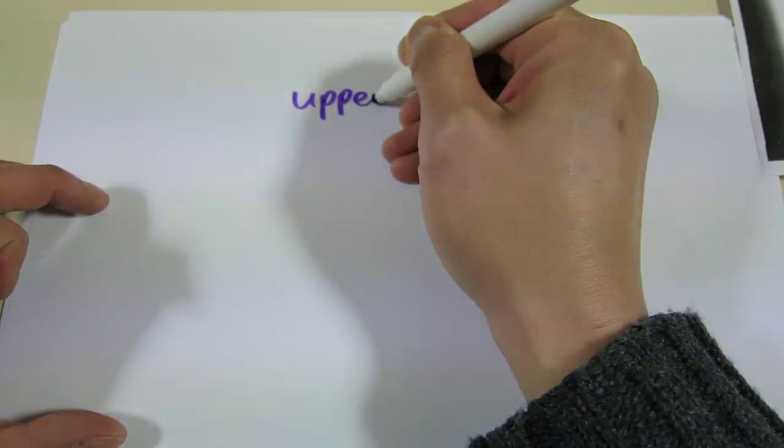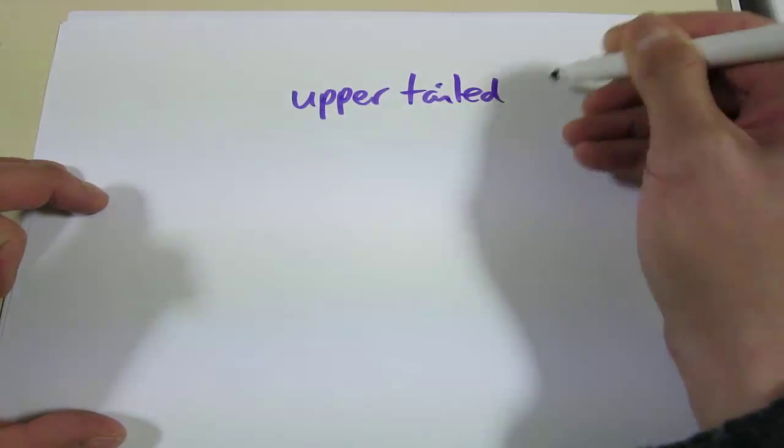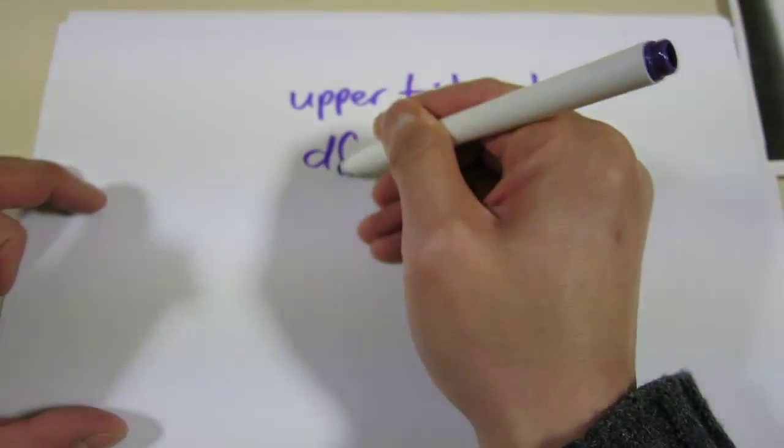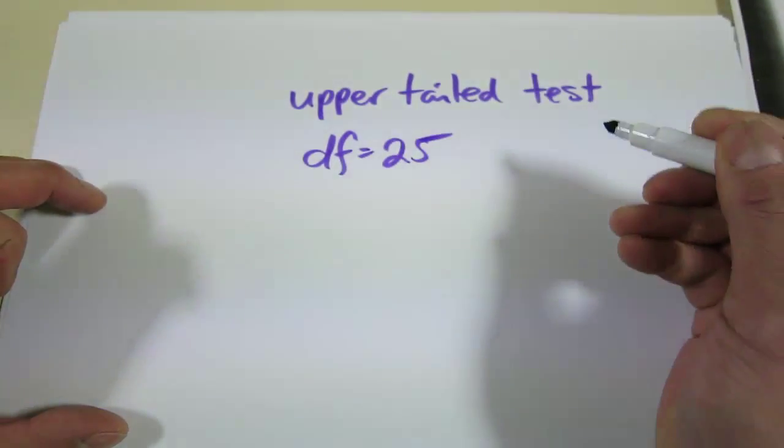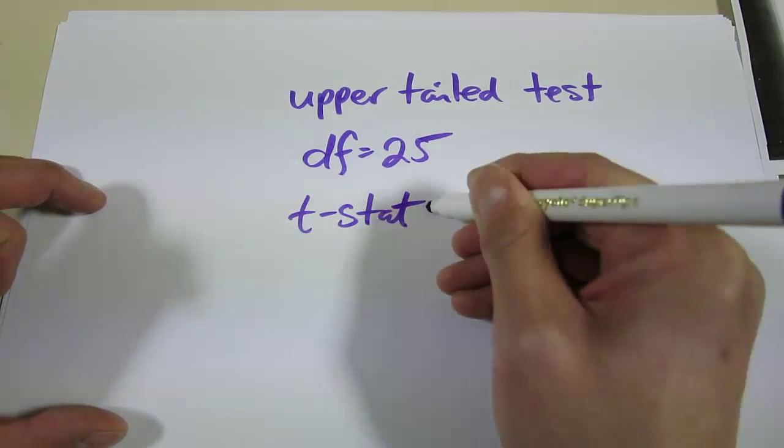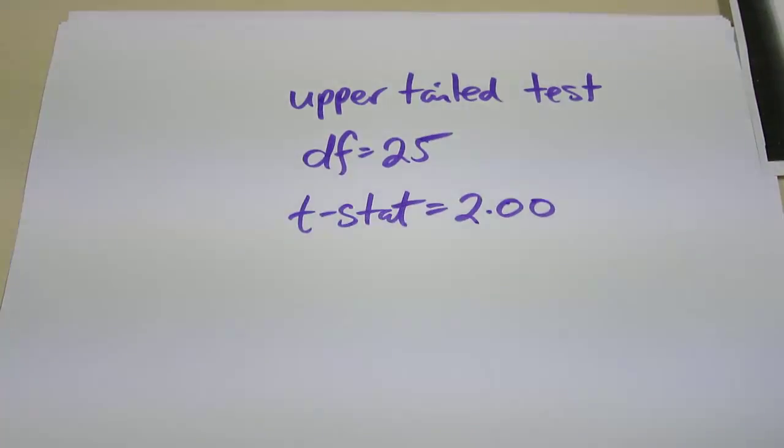Let me give you a quick example. Suppose we're dealing with an upper-tailed test, and we want to calculate the p-value. We know that the degrees of freedom is equal to 25, and you've calculated your t-statistic to equal 2 exactly. And we want to find the p-value.